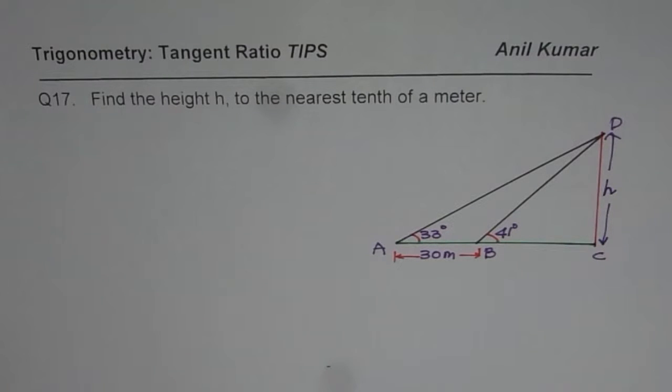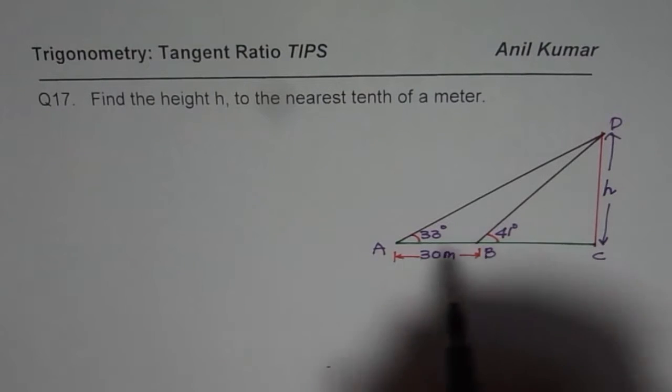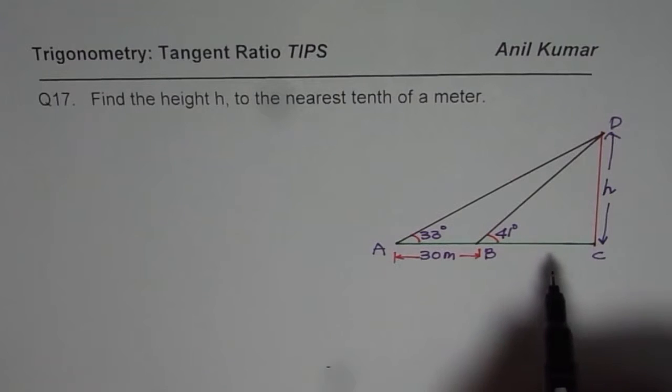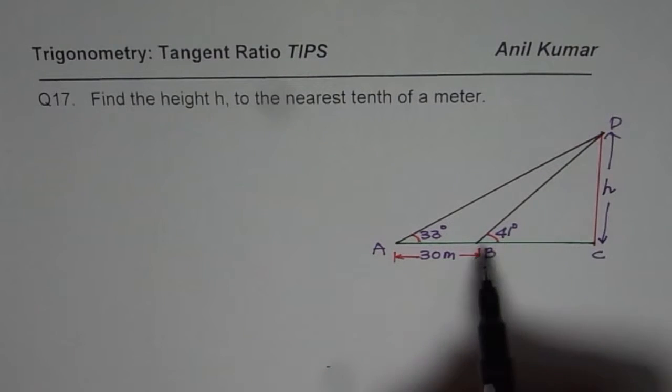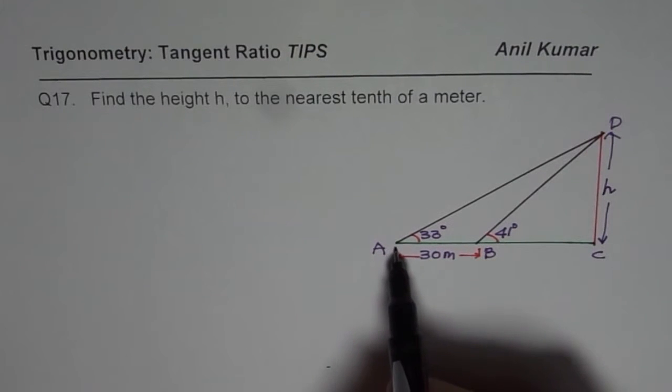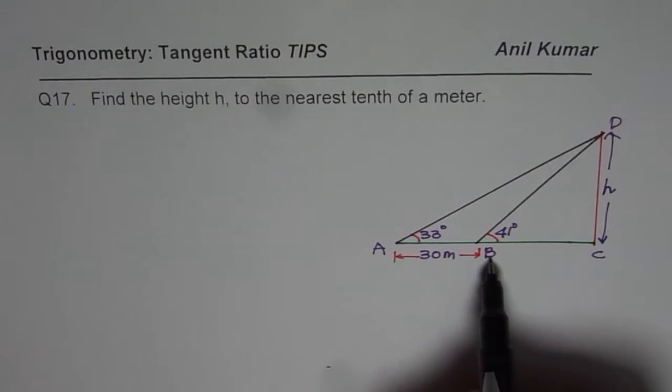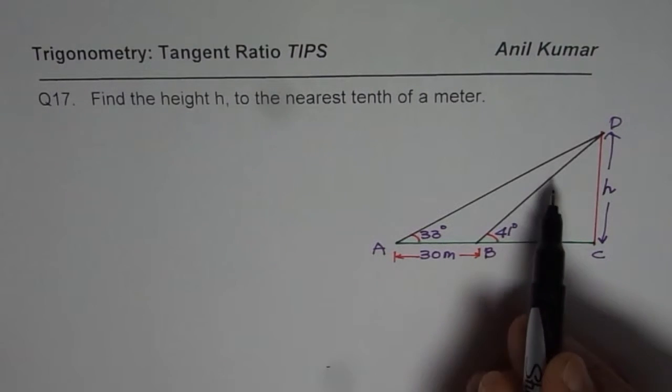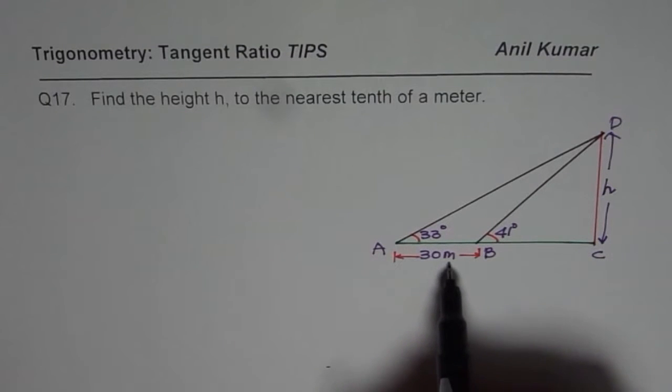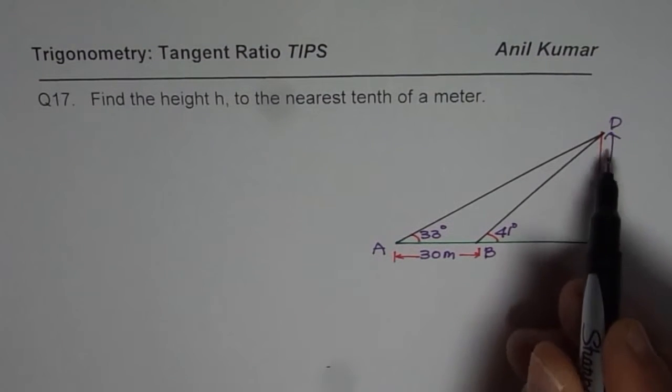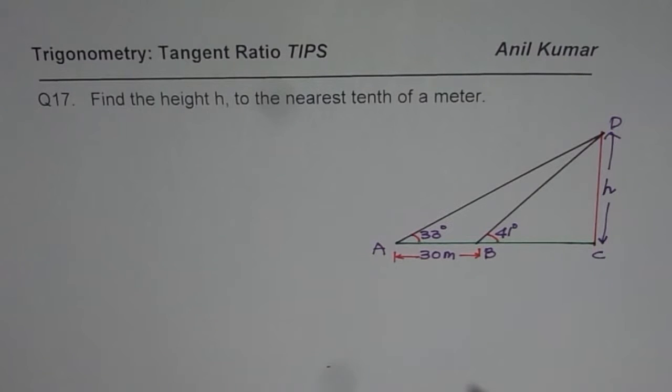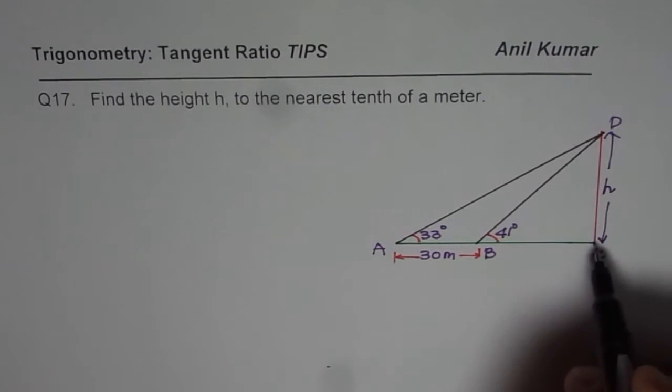Question number 17 is: find the height h to the nearest tenth of a meter. You are given the diagram. Basically you are checking this point D from two different points. Angle of elevation from point A is 33 degrees, angle of elevation from point B is 41 degrees, and these two points are 30 meters apart. You need to find the height of this particular item, whatever it is.